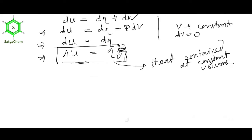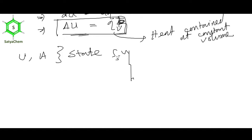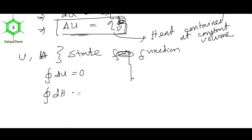So, enthalpy is heat content at constant pressure and internal energy is heat content at constant volume. Both U and H are state functions. The cyclic integral of dU = 0 and the cyclic integral of dH = 0, because in a cyclic process the initial and final states are the same, so changes in U and H are zero.